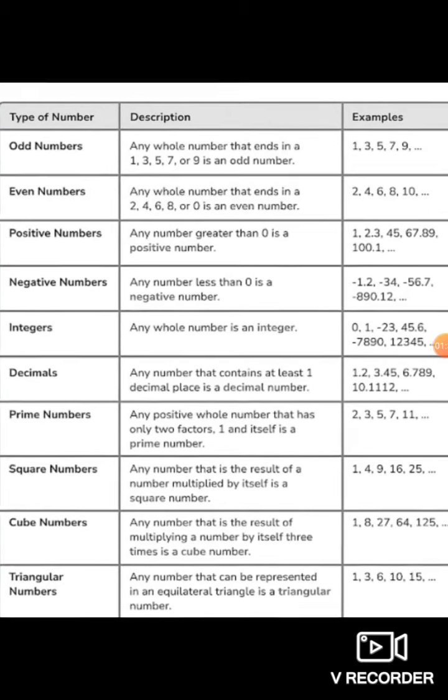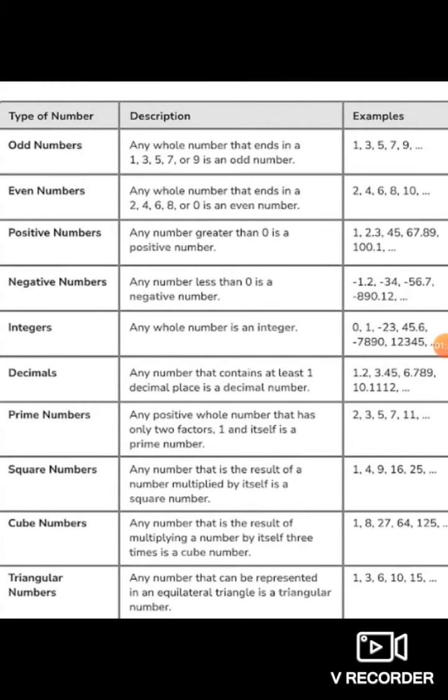Prime numbers. Any positive whole number which has only 2 factors, 1 and the number itself. Like 2, 3, 5, 7, 11, 13, 17, 19 and so on.